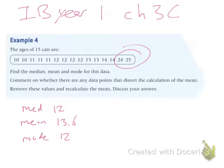Yeah, 24 and 25, they seem to distort your calculations. They're bringing your average up to a 13.6.